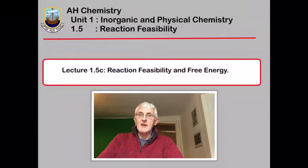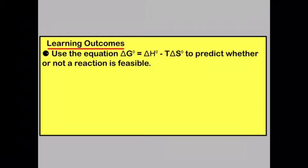In this lecture, we're going to look at reaction feasibility and free energy. By the end of this lecture, you should be able to use the equation delta G equals delta H minus T delta S to predict whether or not a reaction is feasible.